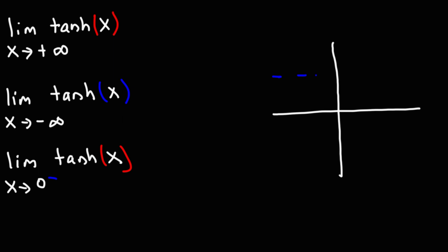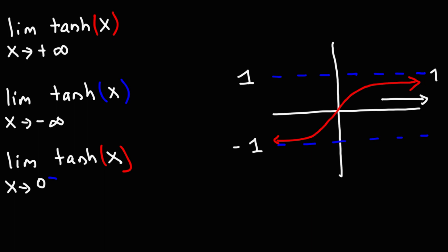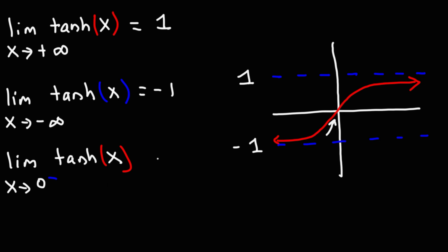Hyperbolic tangent has two horizontal asymptotes: one at y equals positive 1, and the other at y equals negative 1. The graph is an increasing function and looks like that. As x goes to positive infinity, the y-value approaches 1. As we go towards negative infinity to the left on the x-axis, the y-value approaches negative 1. As we approach an x-value of 0 from the left side, the y-value is 0, so this is going to be equal to 0.